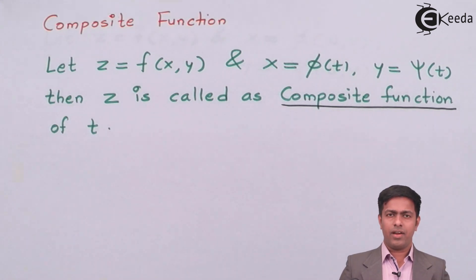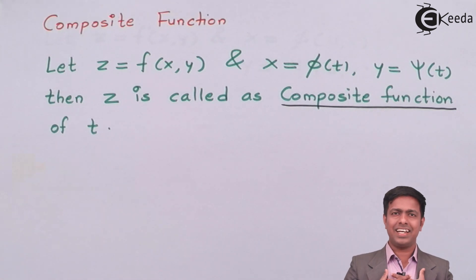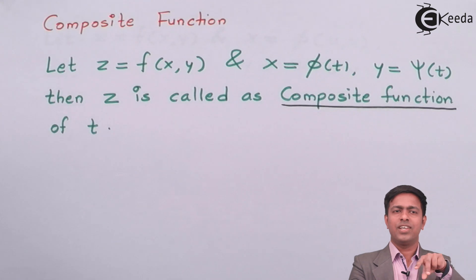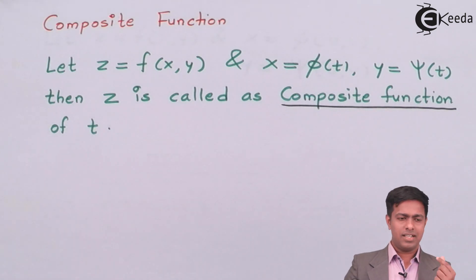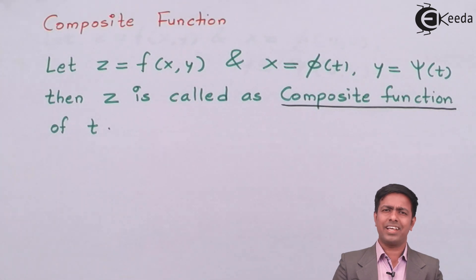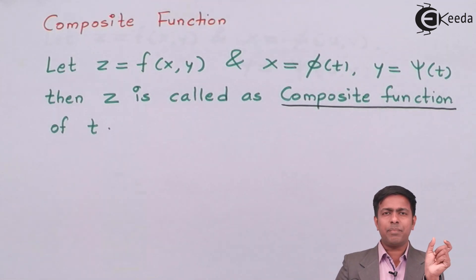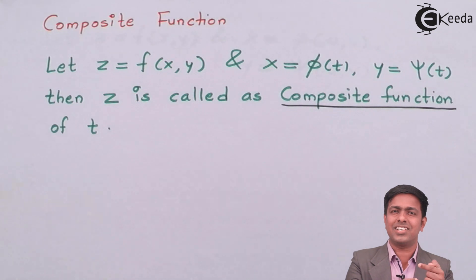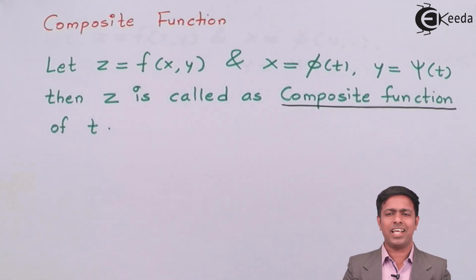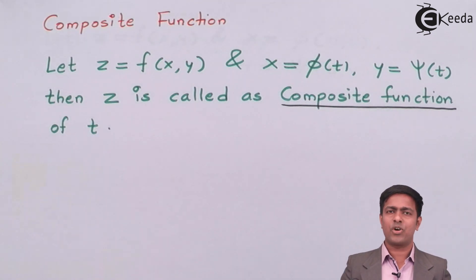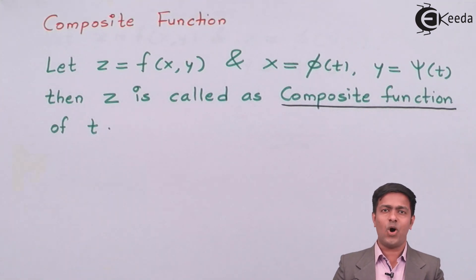Z is related with T through X and Y. Whenever the dependent variable Z and the independent variable T are related with each other through some intermediate variables like X and Y, such a function is called a composite function. So here we can say that Z is a composite function of T.